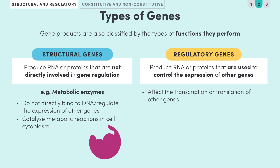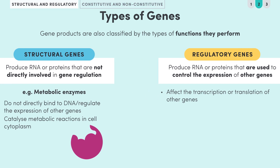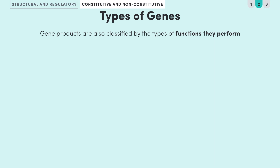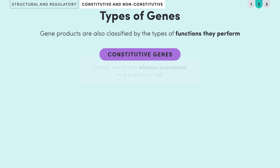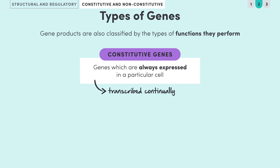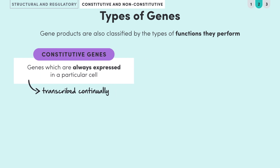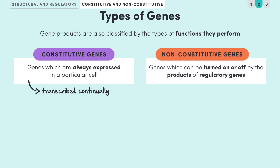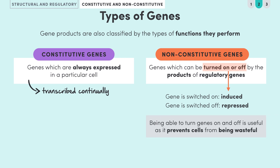A second way to categorize genes is based on whether they are constitutive or non-constitutive. A constitutive gene is one that is always expressed in a particular cell because it is transcribed continually. Non-constitutive genes, on the other hand, can be turned on or off by the products of regulatory genes. When a gene is switched on we say it is induced; when it is turned off we say it is repressed. Being able to turn genes on and off is useful because it prevents cells from being wasteful.